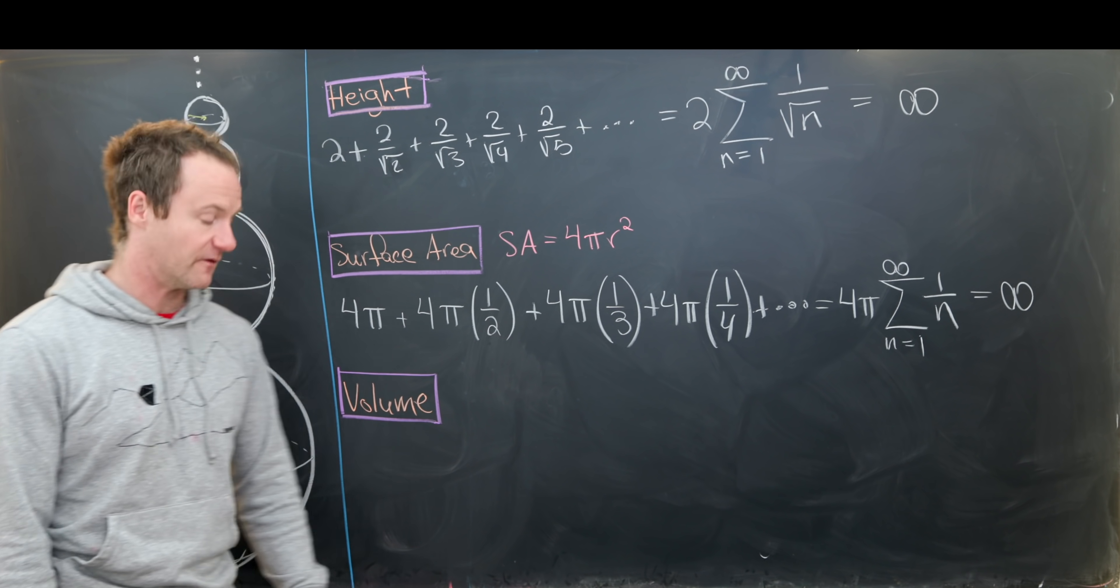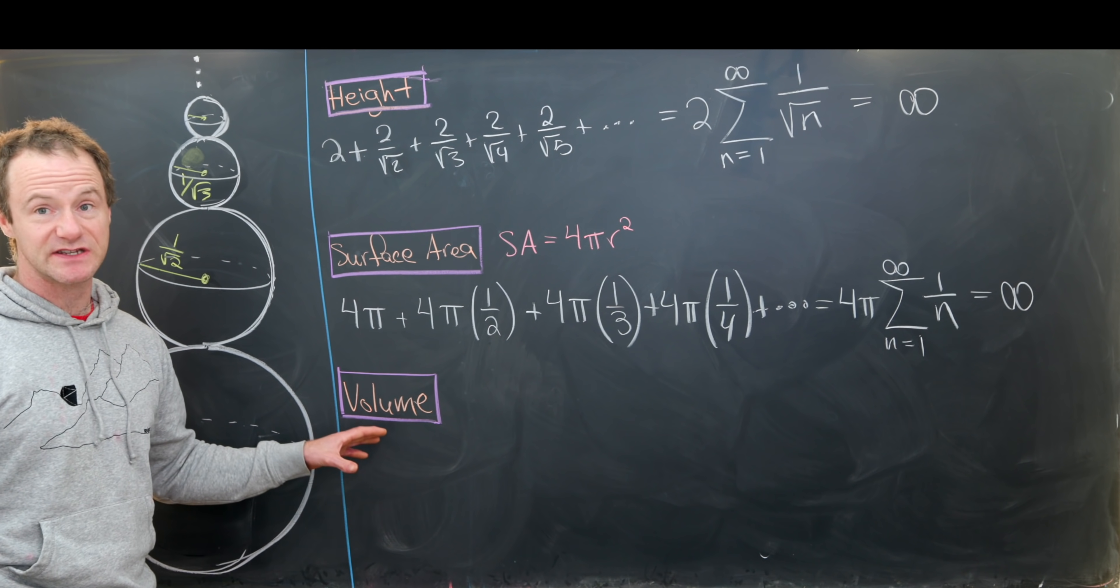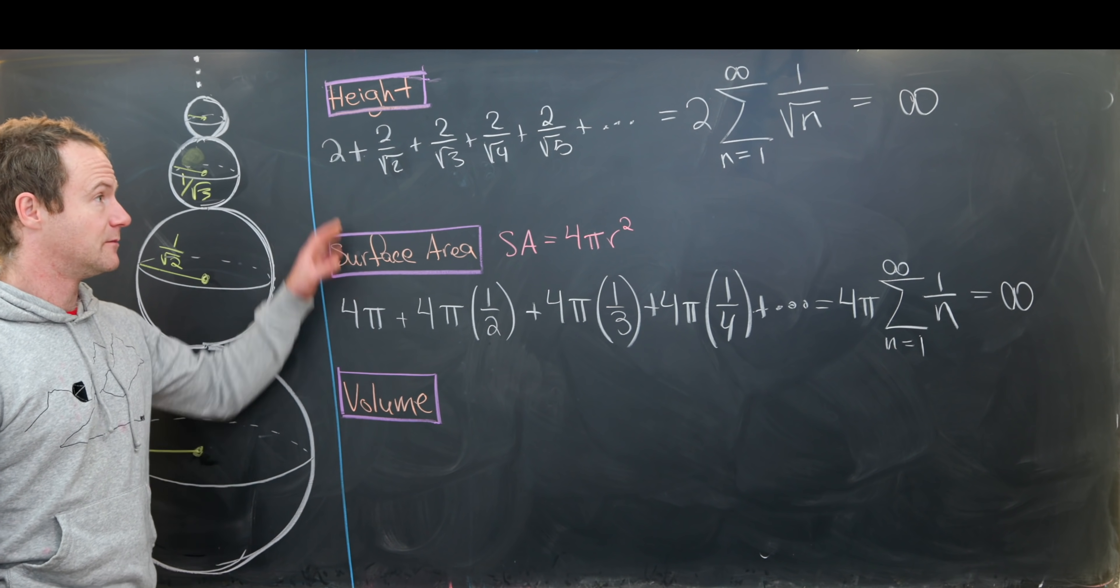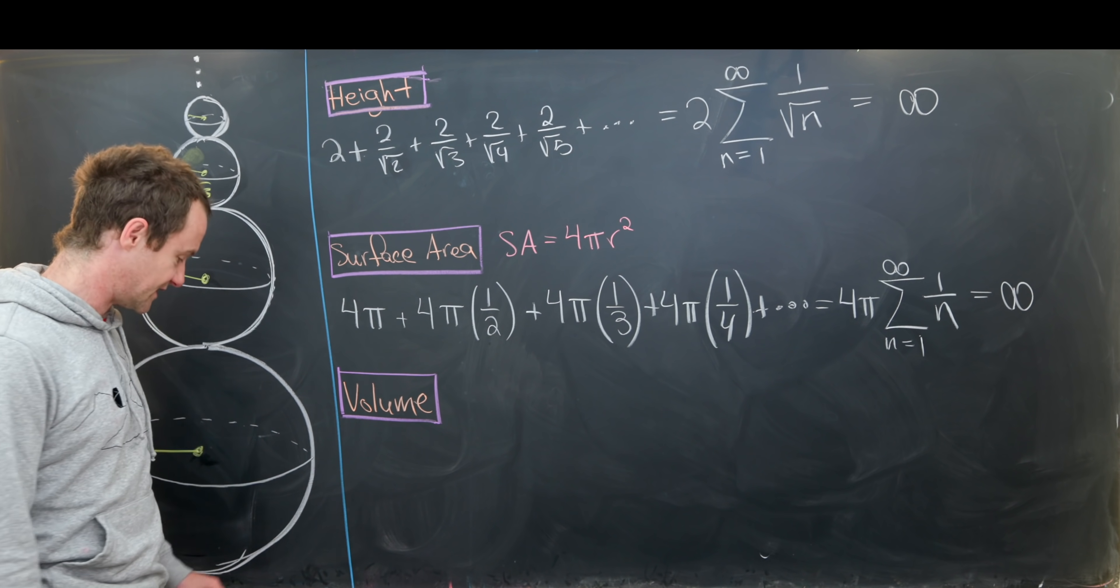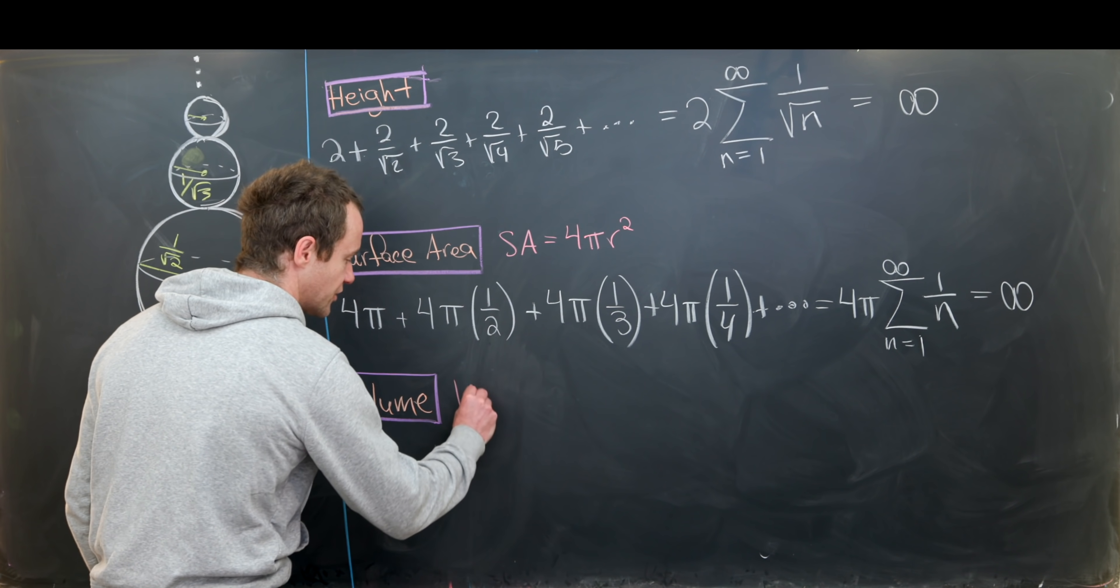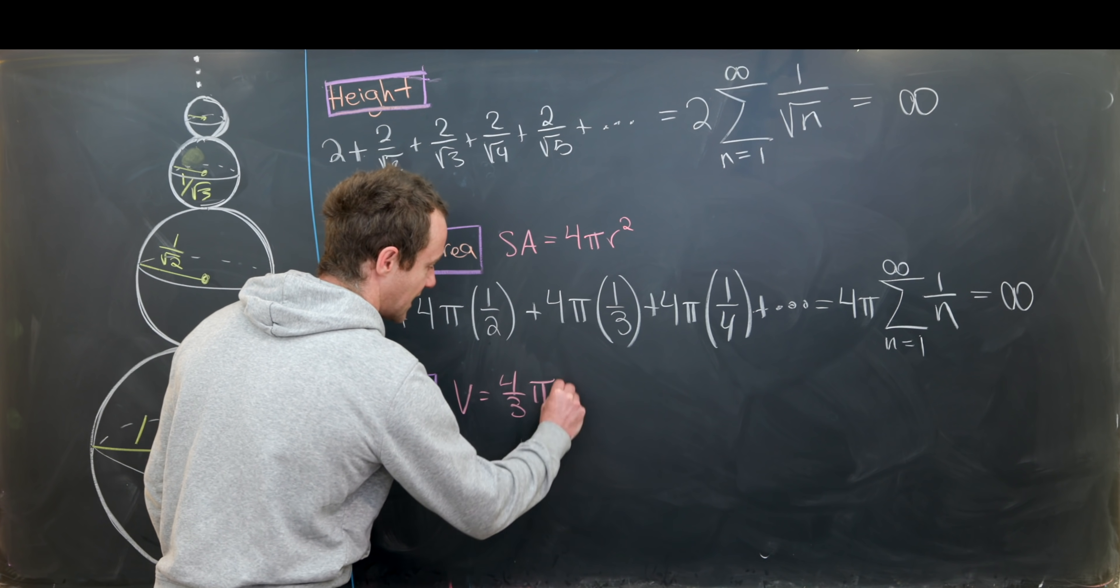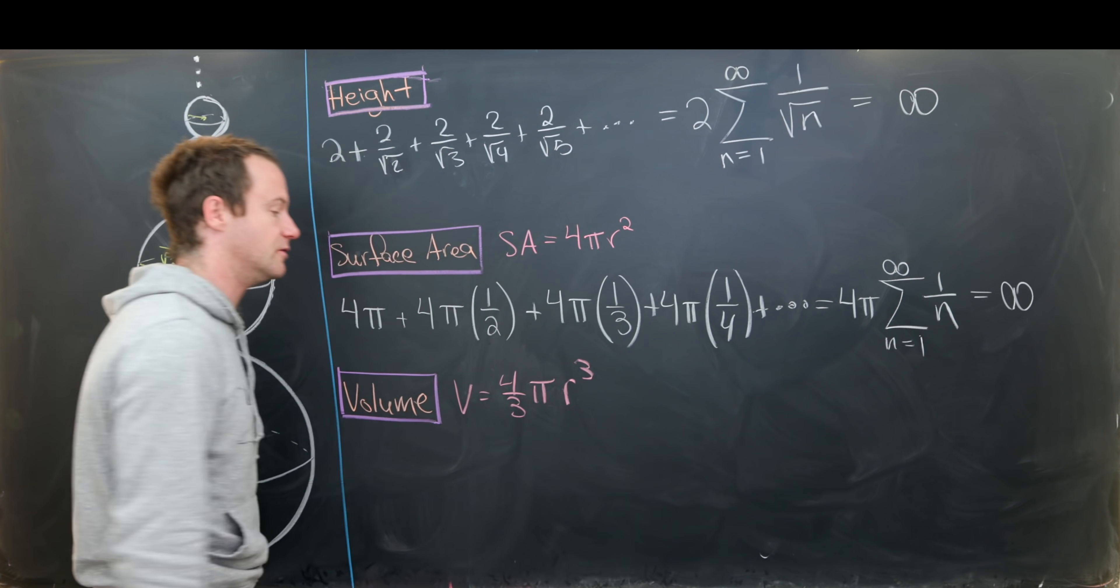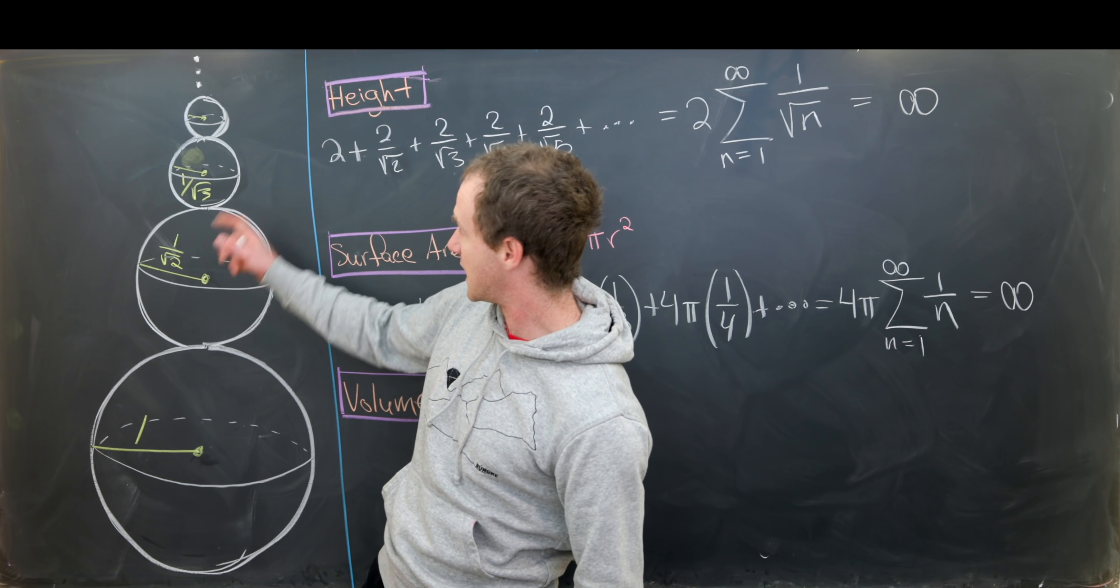Now let's finally calculate the volume. Well, obviously something kind of interesting is going to happen with this volume. Because if we got infinity for all of these, then it wouldn't be super interesting. There'd be no point to do this. So let's look at the volume. Let's recall that the volume of a sphere is given by four thirds times pi times r cubed.